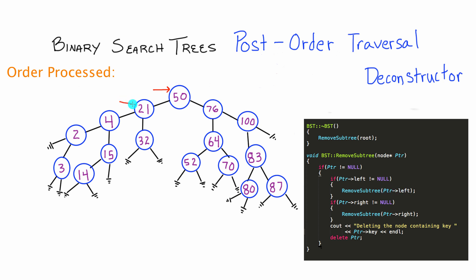This if condition says call yourself but pass in the pointer to that left node — so now think of this as starting a new process. The node pointer PTR in this second process is pointing to node 21. PTR starts at the top, enters the same if condition because node 21 has a left child, then calls another instance of remove subtree passing in node 21's left pointer. Now we're looking at that node — it also enters the top, has a left child, and calls remove subtree by passing in its left pointer, which now points to node 2.